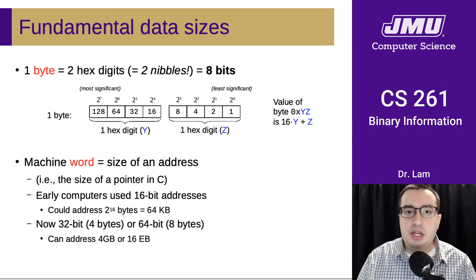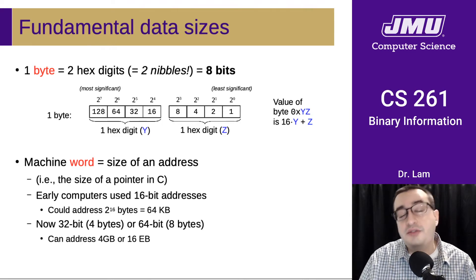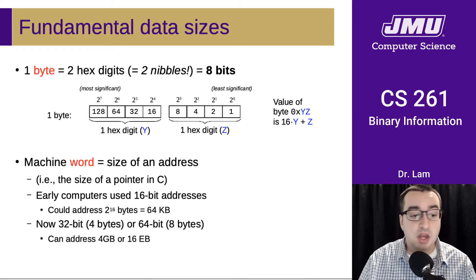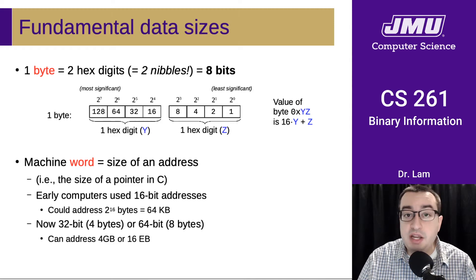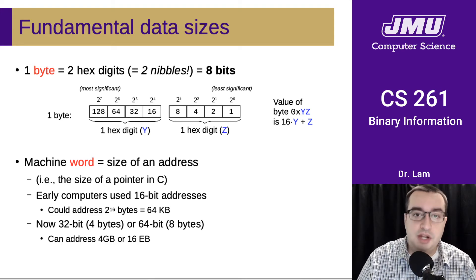Another interesting unit of measurement besides the byte that's often used in computer systems is something called the machine word. A word is often the size of an address — so in C, for instance, this would be the size of a pointer. A lot of early computers used 16-bit addresses, so that was 2 bytes, and that would allow you to address up to 2 to the 16 bytes in memory, which gives you roughly 64 kilobytes of memory.